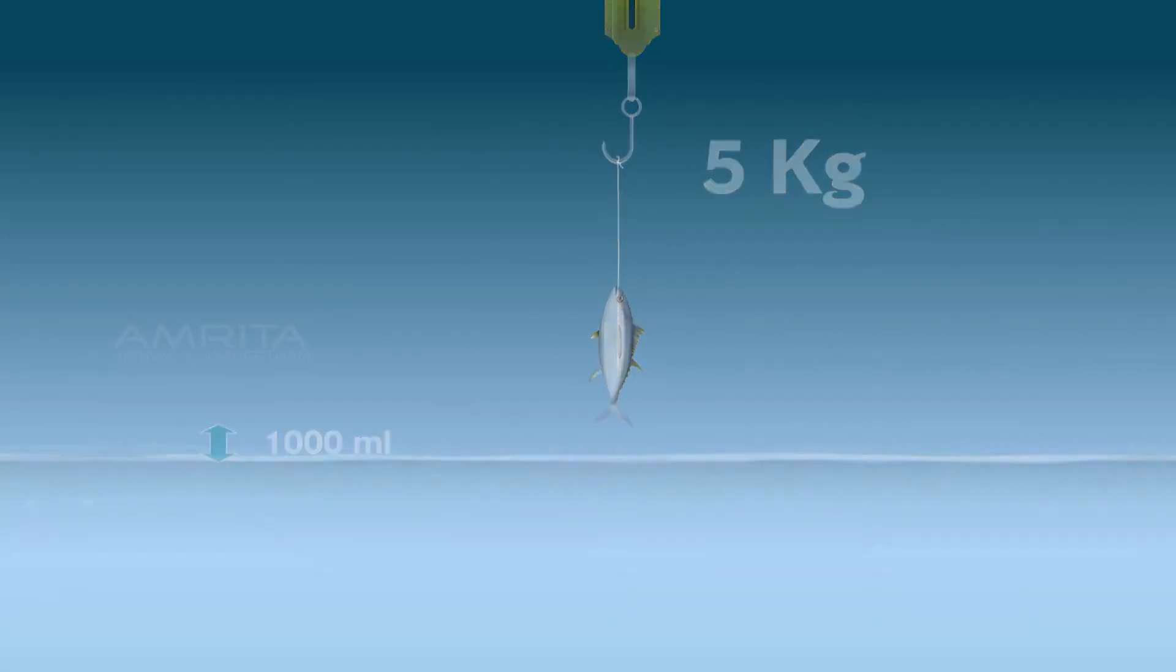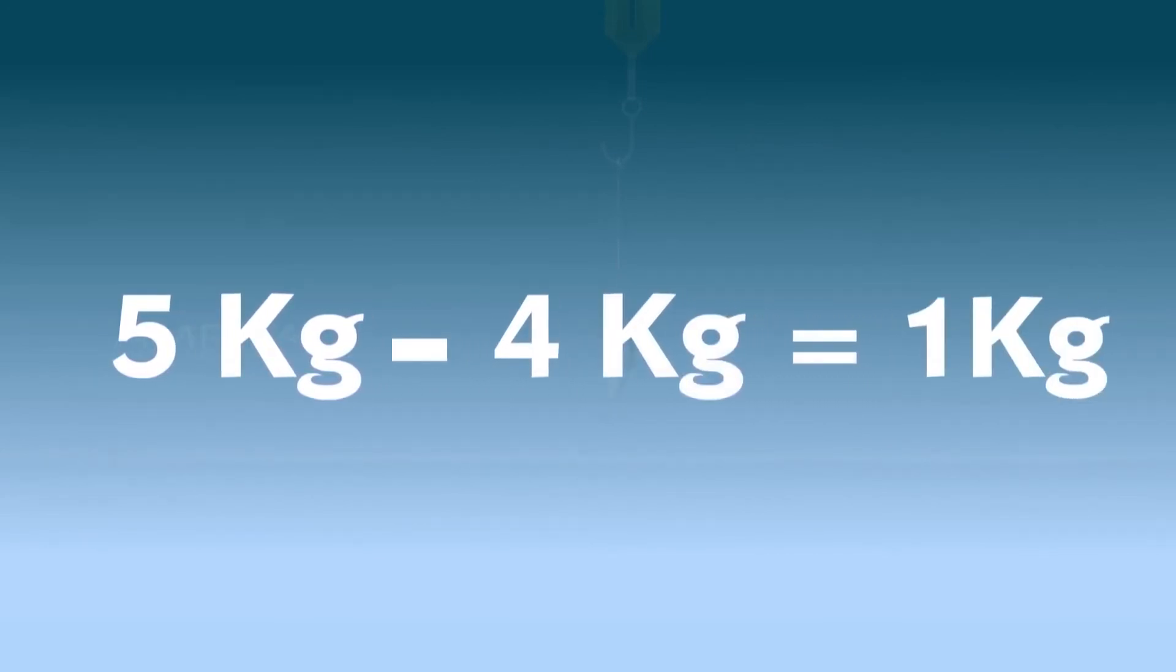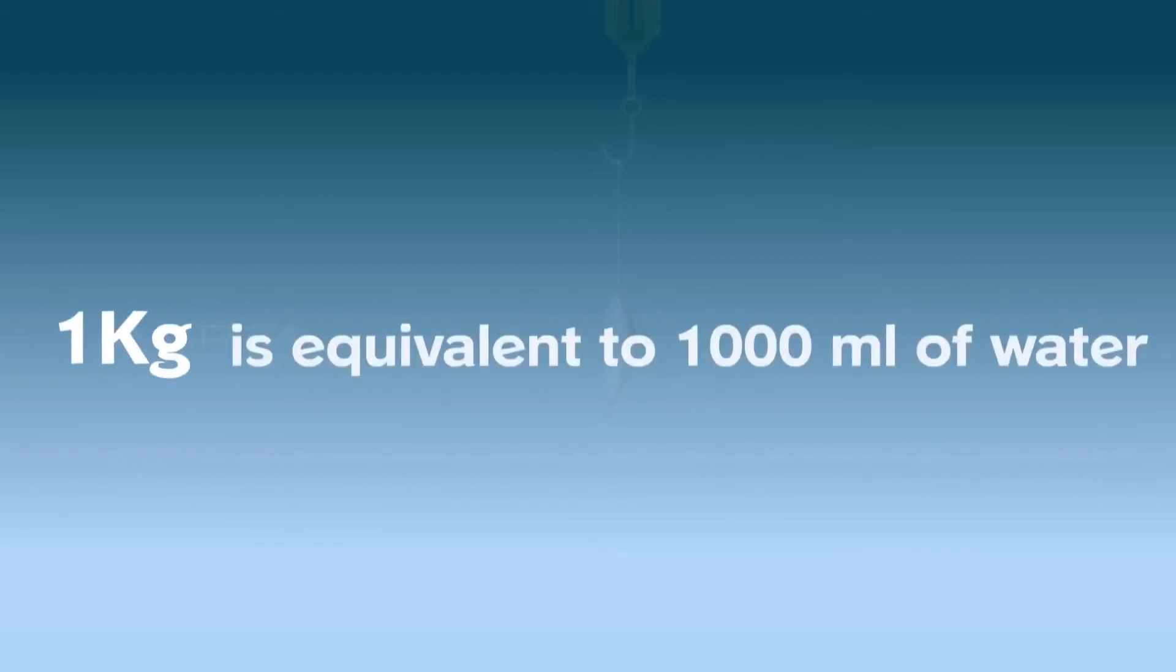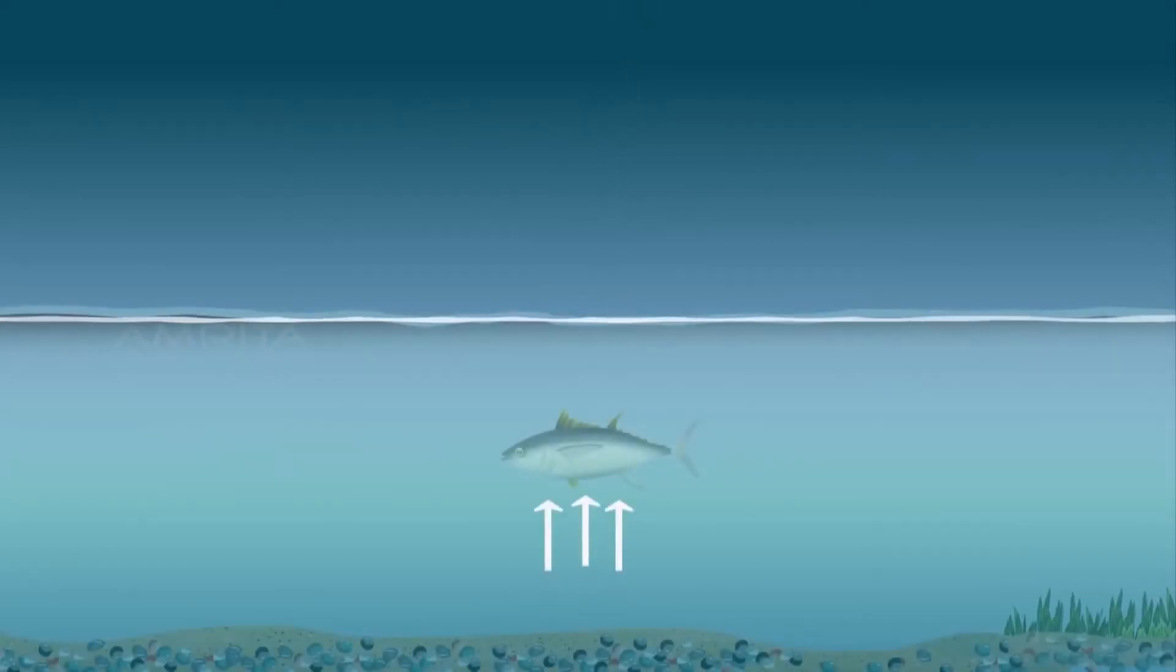That is, the weight of the fish when outside minus its weight when immersed in water equals the loss in weight of the fish. So the loss in weight of the fish will equal the weight of the decreased water. This is because the upthrust or buoyant force is equal to the weight of the decreased amount of water.